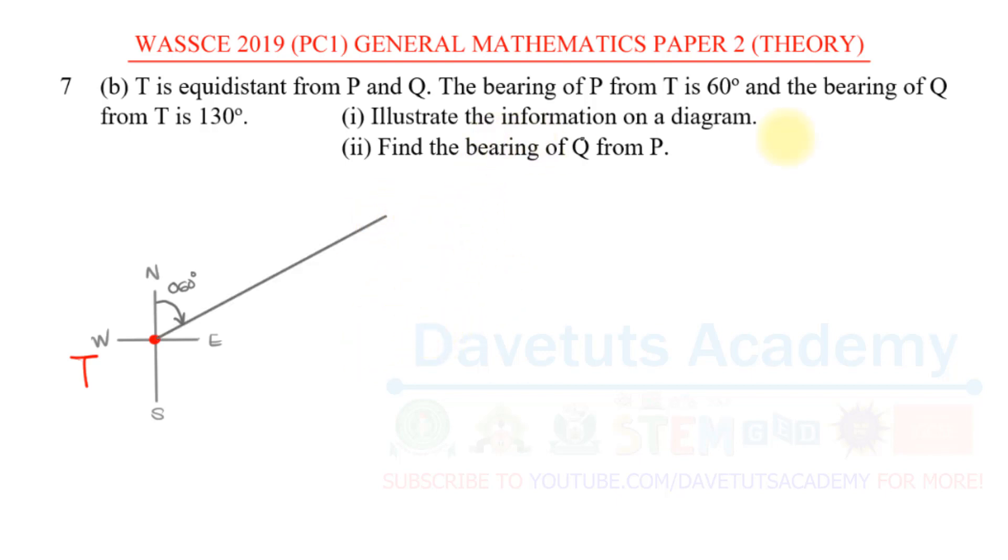So let's say this is the bearing to P. And then look at the other information. If I say the bearing of Q from T is 130, 130 is in the second quadrant, it is more than 90. From north to east is 90, from east to south is another 90. 130 is between 90 and 180, so it will be in this second quadrant. So we can also start from the north and just measure like this. So that is 130.